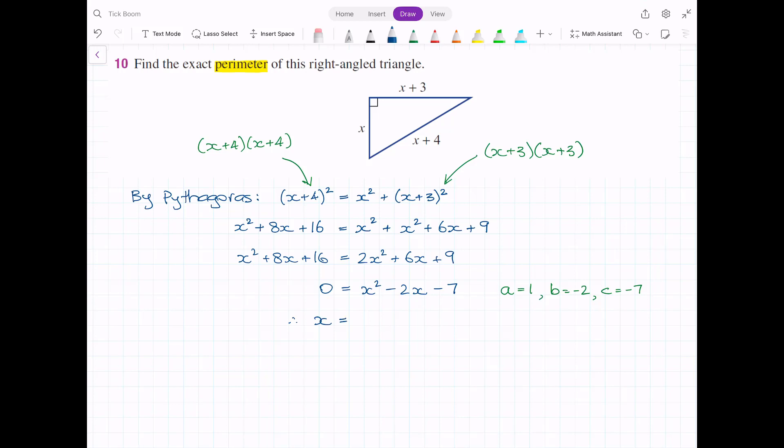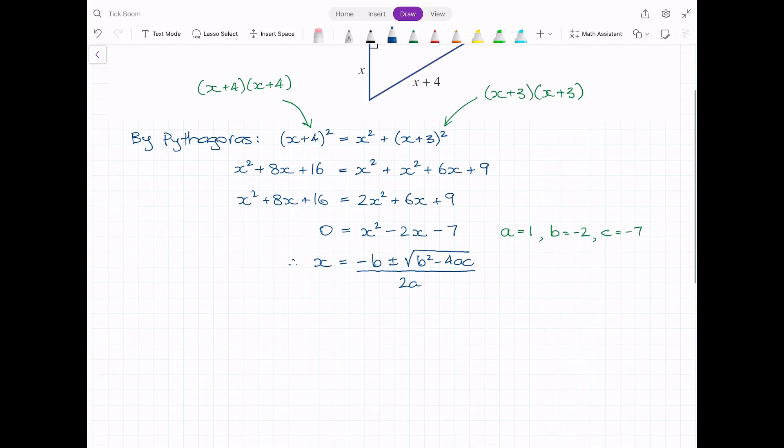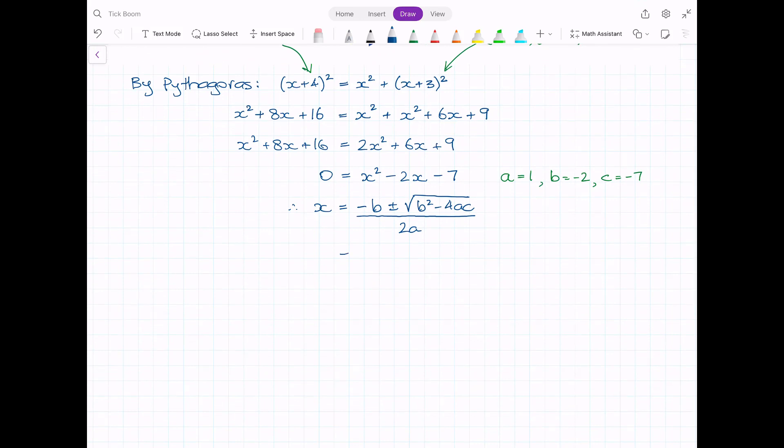Therefore, x equals... I'll just write the quadratic formula: negative b plus or minus the square root of b² minus 4ac, all divided by 2a. We simply need to substitute our a, b, and c to work out x. Negative b would be negative minus 2 or plus 2. So negative minus 2 plus or minus the square root of (-2)² minus 4 times 1 times -7, all divided by 2 times 1.